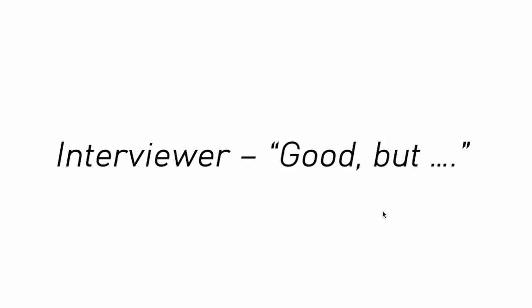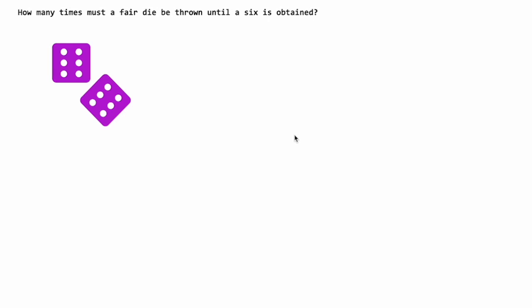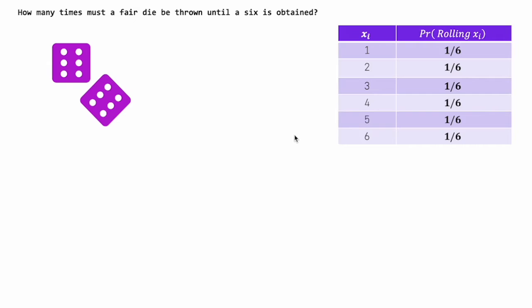Now the interviewer says, good, good, but, but, and that's a big but. How many times must a fair die be thrown until a 6 is obtained? Now if we just list out the probabilities of a fair die, on the right, and if you don't know this, well, good luck to you.